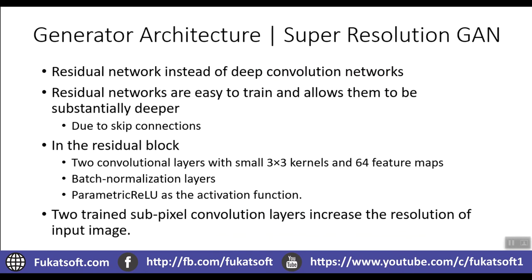Moving forward, the generator network in Super Resolution GAN is slightly different from other convolutional neural networks. The researchers proposed a residual network instead of a simple deep convolutional network. What do we have in a residual network? Skip connections. Skip connections mean that a layer, instead of only connecting to the next layer, also connects to any subsequent layers — for example, from the first layer to the fourth layer. These are called skip connections or residual connections.